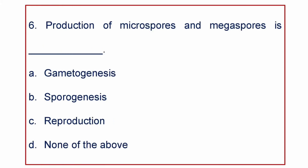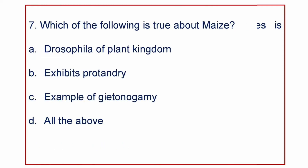Next question: production of Microspores and Megaspores is called — A) Gametogenesis, B) Sporogenesis, C) Reproduction, or D) None of the above. The answer is Sporogenesis. This is one of the most important questions. Which of the following is true about Maize? A) It is the Drosophila of the Plant Kingdom, B) Exhibits Protandry, C) Example of Geitonogamy, or D) All of the above. All three options are correct — the answer is All of the above.